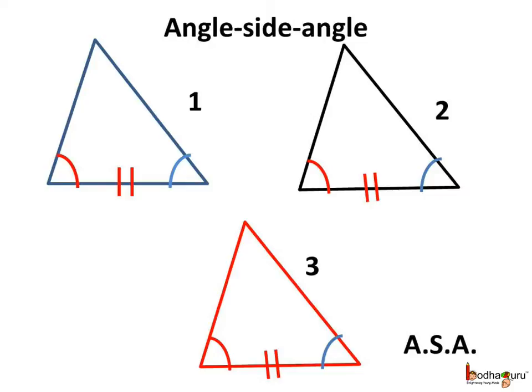So, angle-side-angle: the ASA rule. This is the third criterion of congruency.